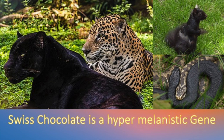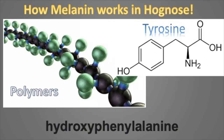Being hypermelanistic doesn't mean it takes away the pattern. It's just overran by dark pigmentation covering the whole animal. In the leopard there, you could see that it has its pattern, but it's just overran by the dark melanin. The way melanin works in hognoses, they have a protein called tyrosine. And the tyrosine uses amino acids to be a building block, and that's essentially what produces that dark pigmentation. It's a protein.